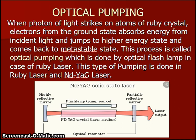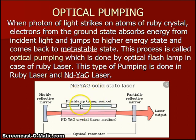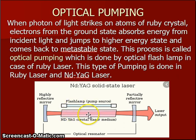The first type is optical pumping. Optical pumping is used in the case of ruby laser or Nd:YAG laser, or we can say optical pumping is used in solid state lasers. In optical pumping, we use an optical flash lamp which emits flashes of light. These flashes of light are absorbed by the medium — the crystal used in ruby laser or Nd:YAG laser — and the atoms in the crystal absorb these radiations and go to the excited state.